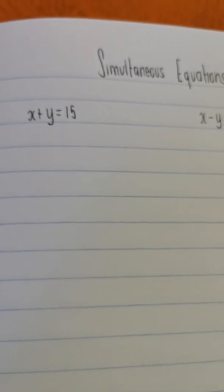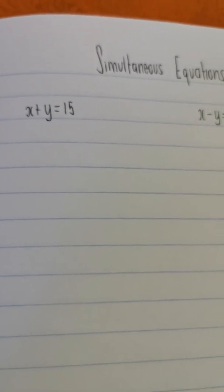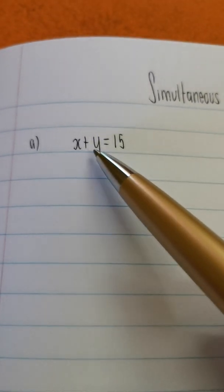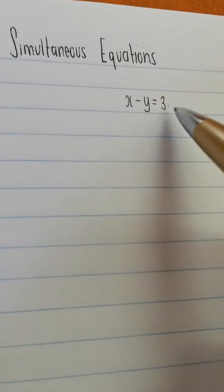Now, the thing with simultaneous equations is we'll tell you to solve simultaneously, and you'll know it's a simultaneous equation because there's two unknown variables in an equation, and the exact same two unknown variables in another equation.